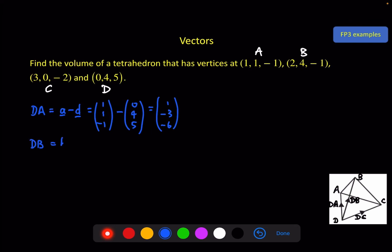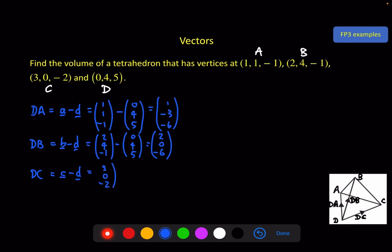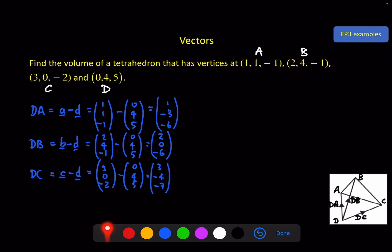Next, d to b: (2, 4, −1) minus (0, 4, 5). And d to c as well. It doesn't matter which one you choose to be the common point for each of the vectors, so long as you're consistent. And of course, if one of them happens to be the origin, that will be the easiest one to use. So here are my three vectors that I'm going to use in the scalar triple product. And since it's a tetrahedron, the volume is equal to one-sixth of the scalar triple product.